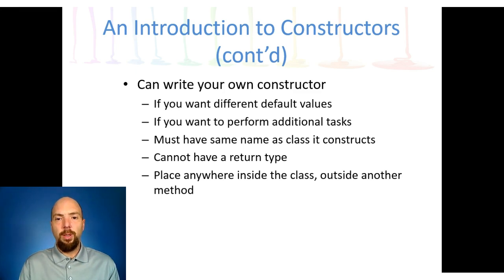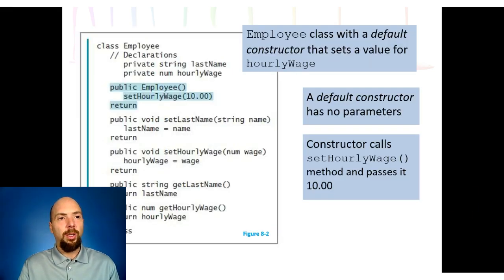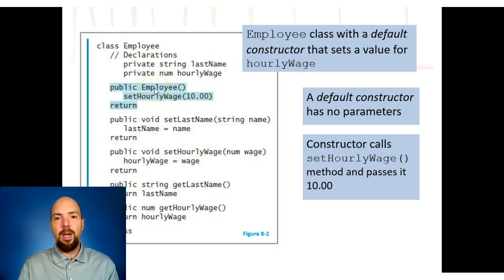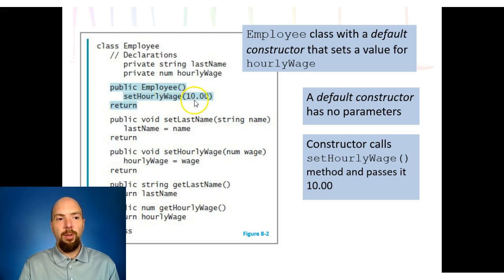To create a constructor, we place it inside the class, outside of any other method. We have a class object called employee, with declarations for our attributes. Then there's a method called public employee — notice it has the same name as the class. This allows us to decide what happens when the object gets constructed. If somebody creates a new employee, it will automatically run this method and set the hourly wage to $10.00.